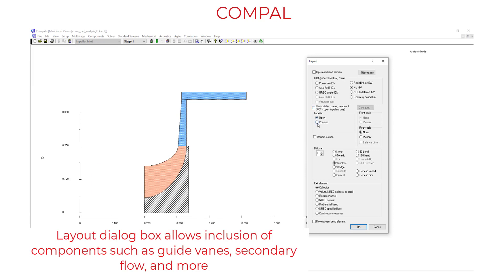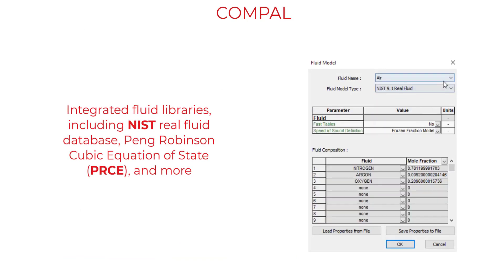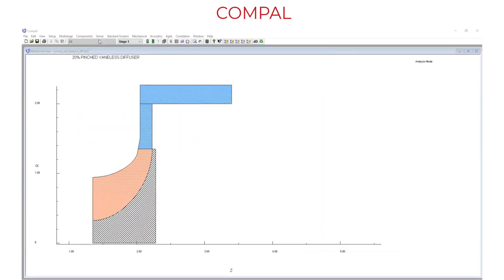We can also add components upstream and downstream for things like veined components and secondary flow paths. And our connection with the NIST library allows you to use all different types of real fluids with multi-phase or multi-constituent.